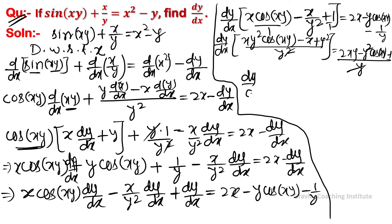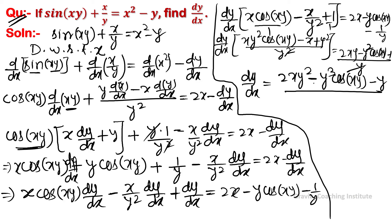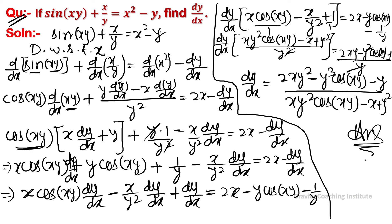Therefore, dy/dx equals: if we multiply through by y², the result is (2xy² - y³·cos(xy) - y) / (xy²·cos(xy) - x + y²). This is our required answer.